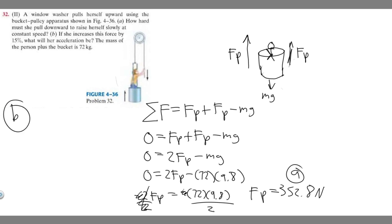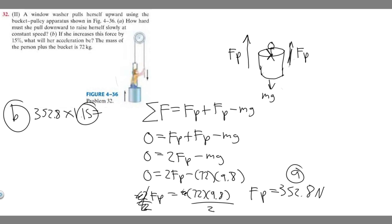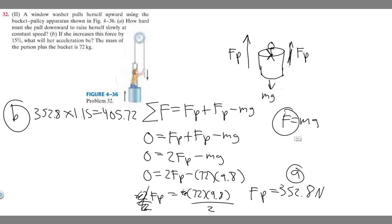Let's move on to part B. If she raises this force by 15%, what will her acceleration be? We take the force of 352.8 Newtons and multiply it by 1.15 to raise it 15%, giving 405.72 Newtons. We'll plug this back in for F sub P, solve for the total force, and then since force equals mass times acceleration, divide by the mass to get the acceleration.